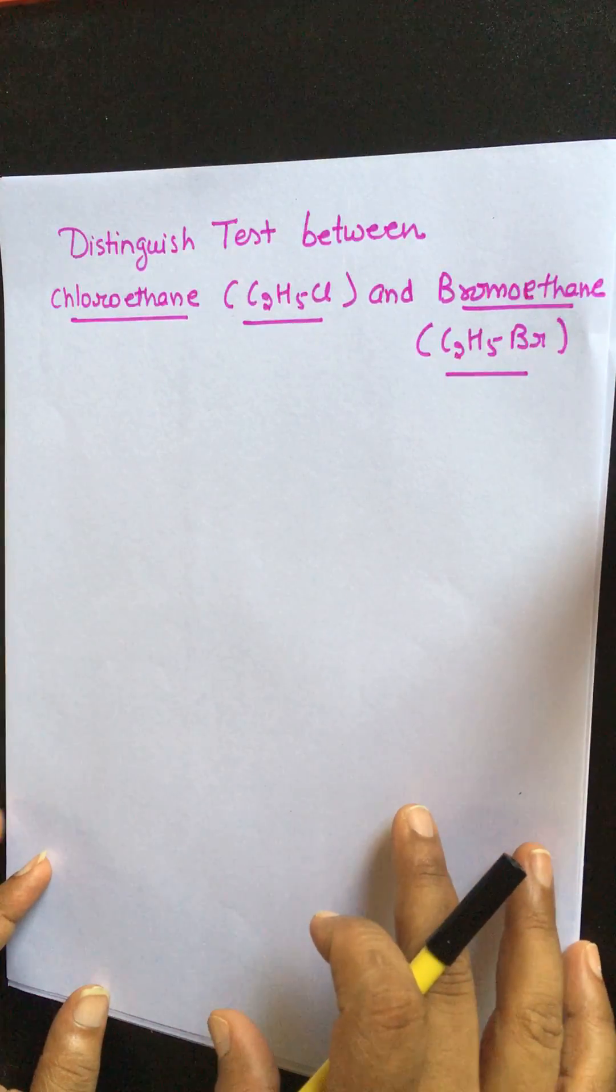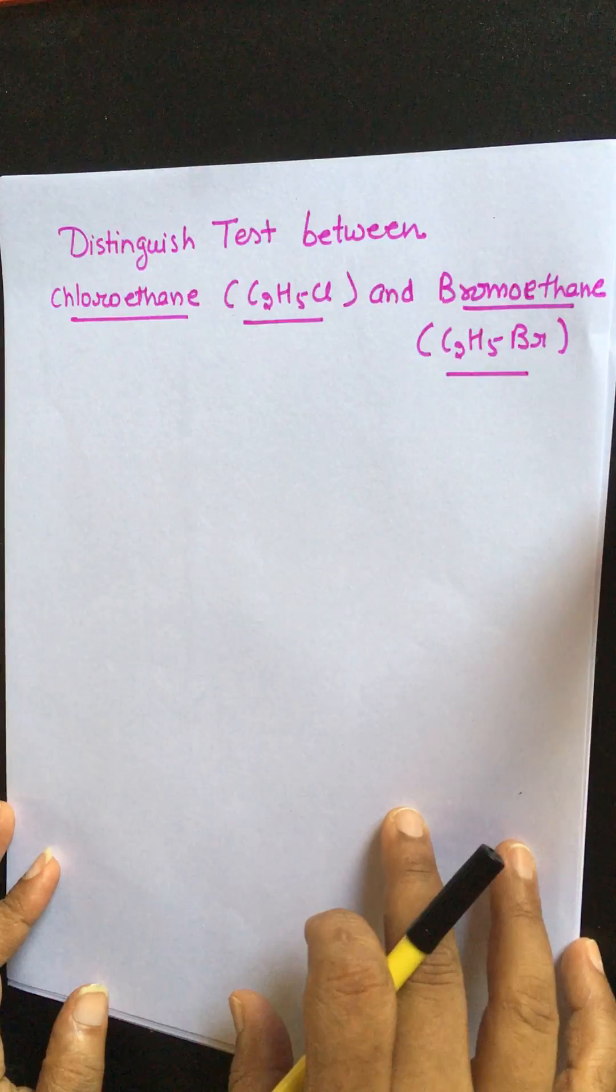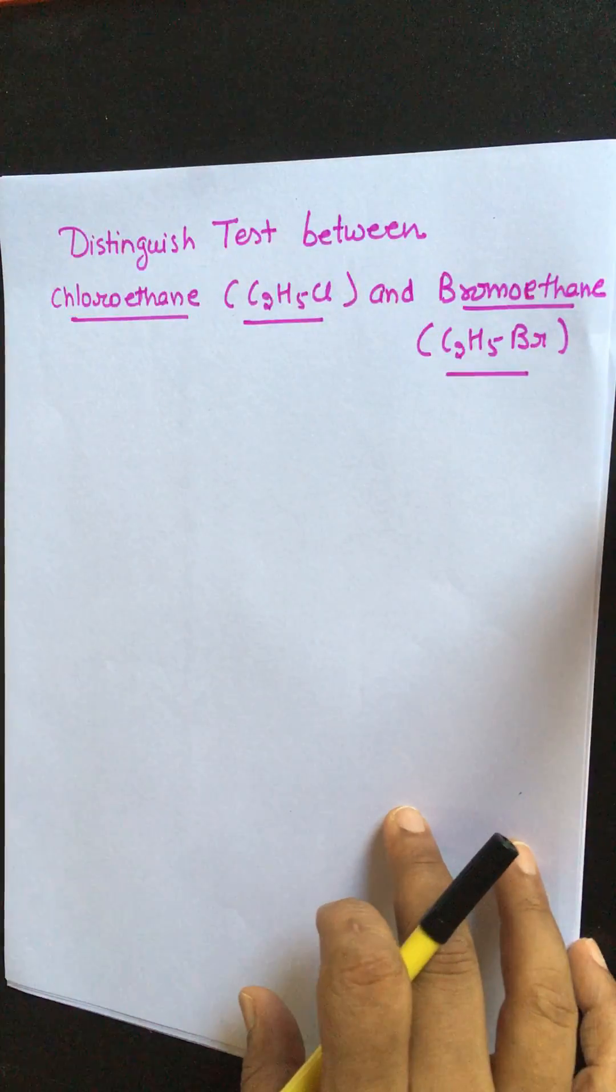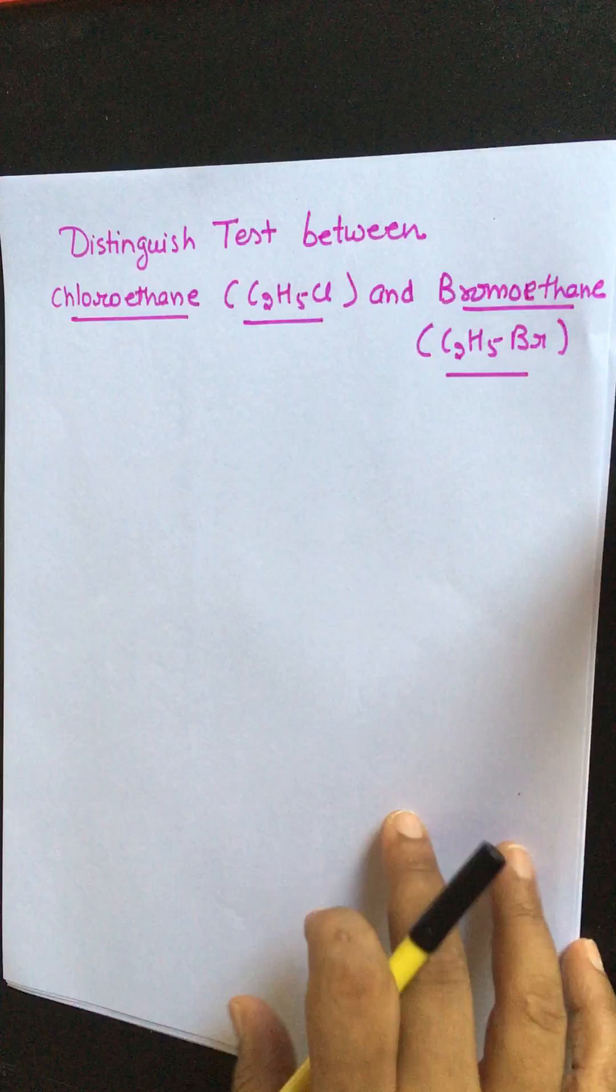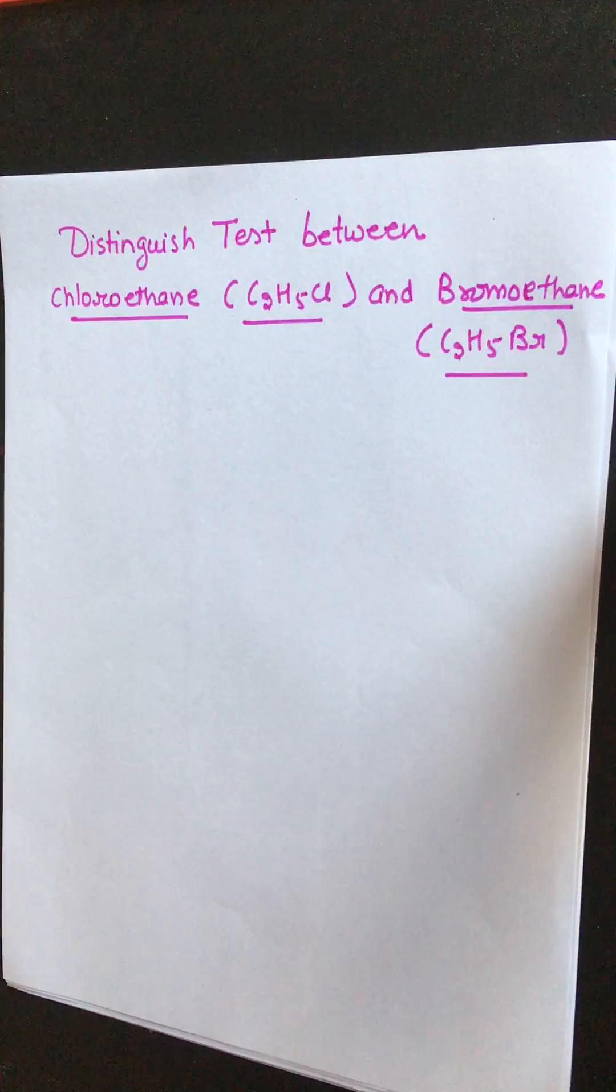In this video we will discuss how we can distinguish between chloroethane and bromoethane. Silver nitrate test can be used to distinguish between chloroethane and bromoethane. Silver nitrate solution can distinguish halogens in haloalkanes.